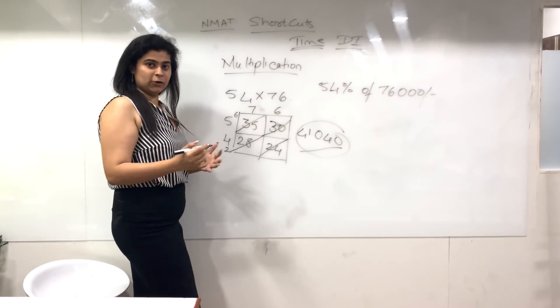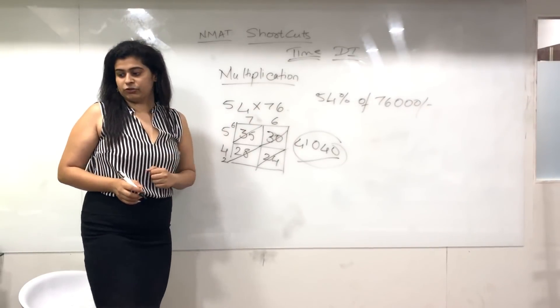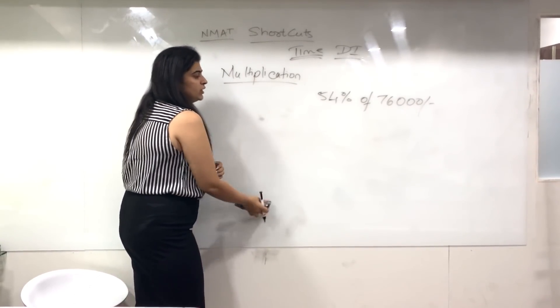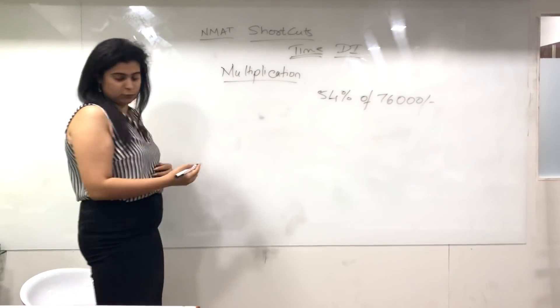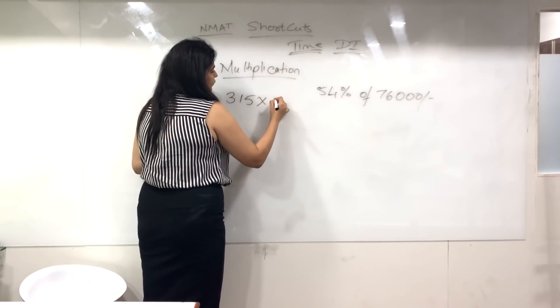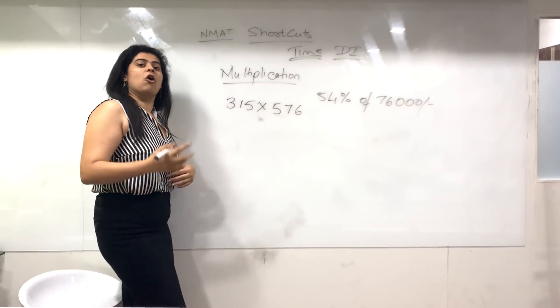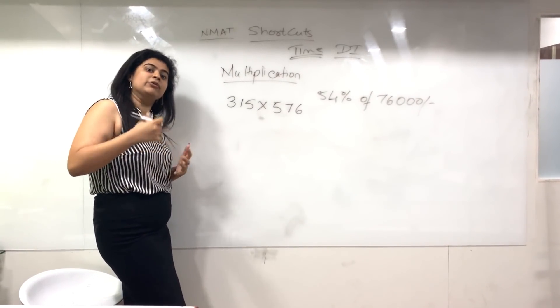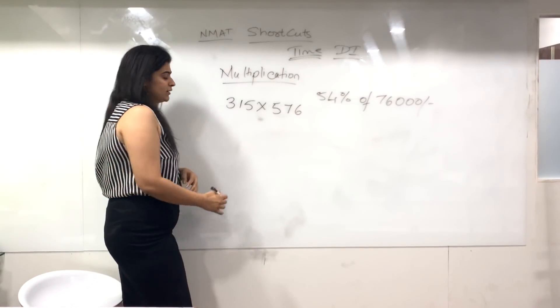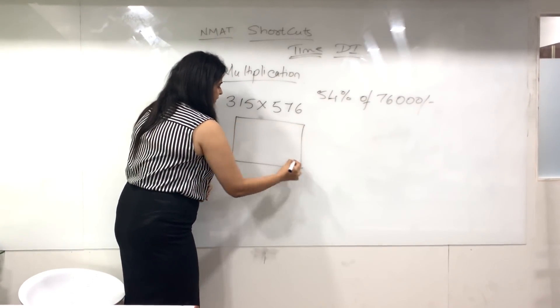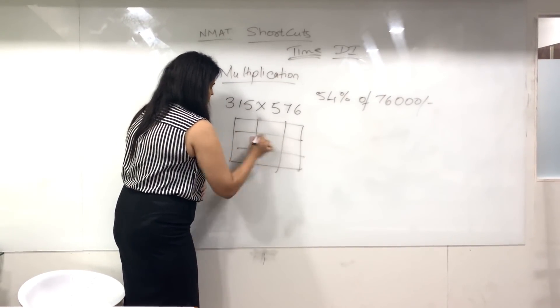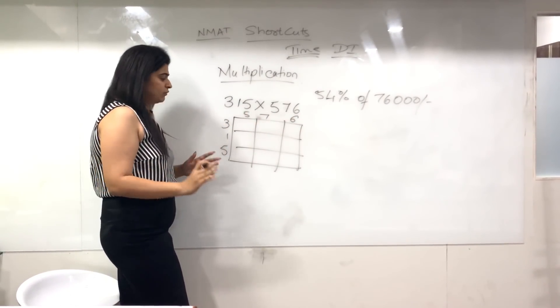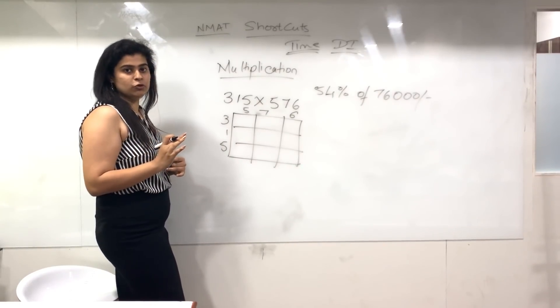This is how you do multiplications. The same thing works if instead of 2 by 2, you have a 3-digit number—the same can be done with a 3 by 3 matrix. Let's take one more example: suppose 315 into 576, or if it's 31.5% of 56,700. Let's take this example. The technique remains the same—make a 3 by 3 matrix with 315 and 576.